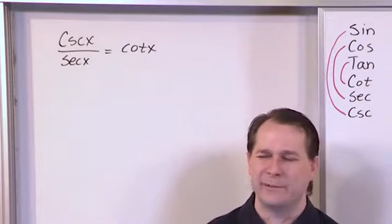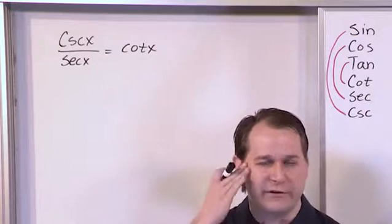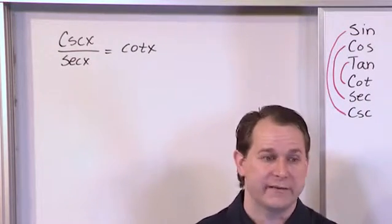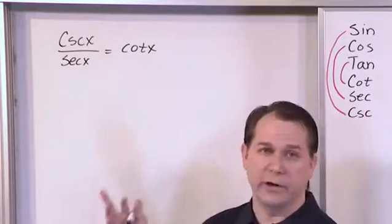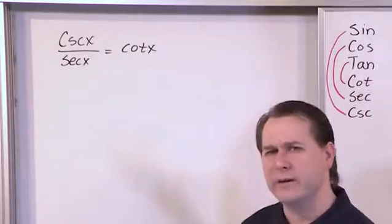You're almost always, especially when we get into more advanced problems, not going to be able to do this in your head. A lot of students will look at an identity and they'll freeze up because they'll say, well, I don't know how to make it equal to a cotangent. I don't see it. Even if I do some stuff, I don't see how it can be equal to cotangent.